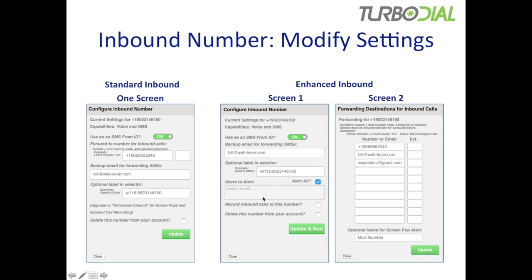There are a couple of new fields on screen one. 'Users to alert' is where you set up email IDs for TurboDial users you want to receive a screen pop when a call arrives at this inbound number. You can enter their email addresses or simply check 'alert all.' You can also choose to record inbound calls by checking that box — a capability not available with standard inbound. The button now says 'Update and Next,' and clicking it saves this information and brings up a new screen showing the forwarding destinations, where up to 10 phones or soft phone clients can be configured.